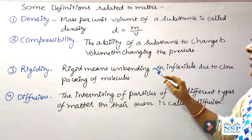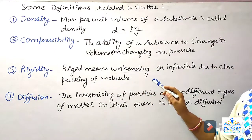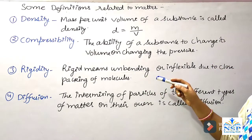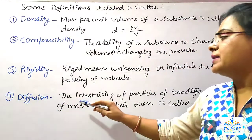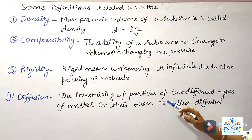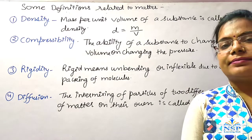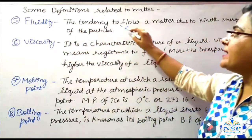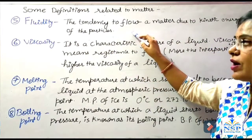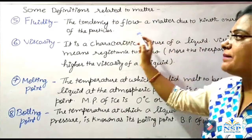Rigidity means unbending or inflexible due to the close packing of molecules. The exception is rubber — it can change its shape. Number four, diffusion — the intermixing of particles of two different types of matter on their own is called diffusion. Diffusion is higher in the gaseous state.